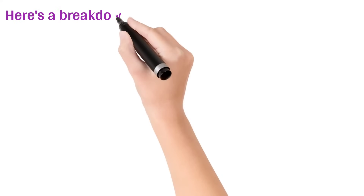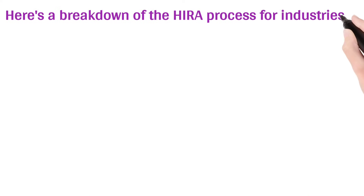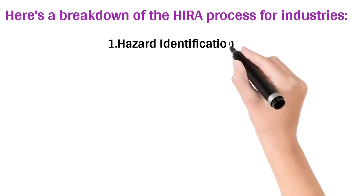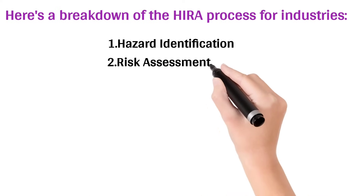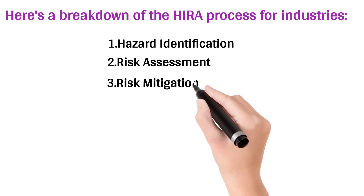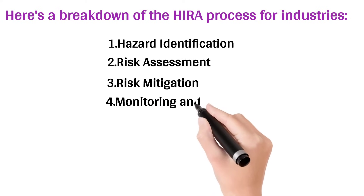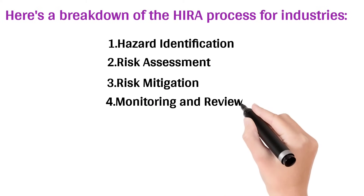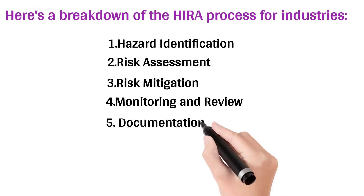Here's a breakdown of the HERA process for industries: 1. Hazard Identification. 2. Risk Assessment. 3. Risk Mitigation. 4. Monitoring and Review. 5. Documentation.